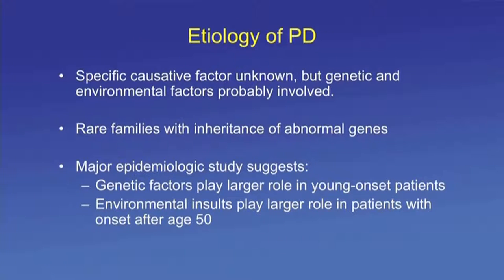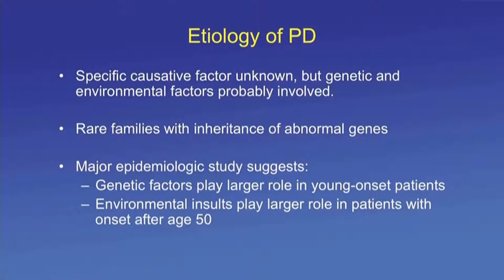The specific causative factor of Parkinson's disease is unknown, but it is probably a double-hit phenomenon. Genetics and environmental factors probably interact or act separately to cause the disease. There are rare families with inherited abnormal genes. Epidemiological studies suggest genetic factors play a larger role in younger-onset patients, while environmental insults play a larger role after age 50. Age is the greatest risk factor.